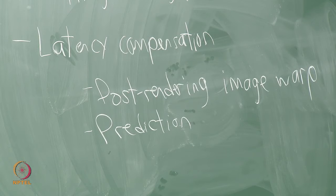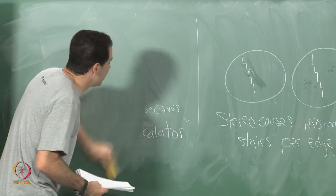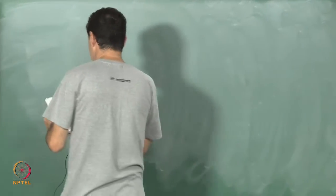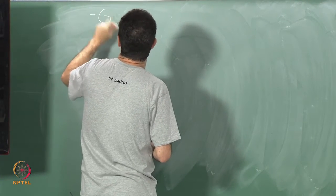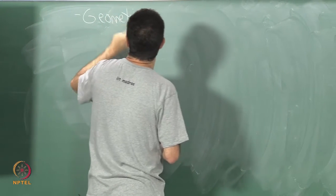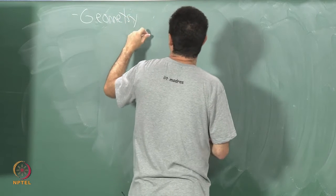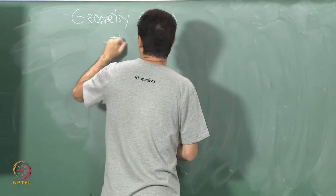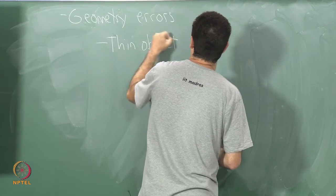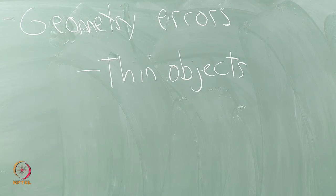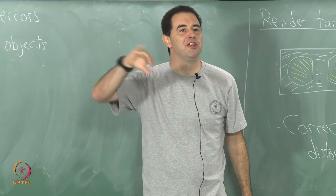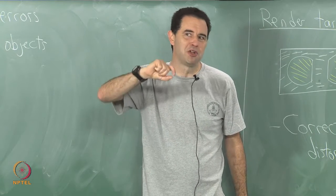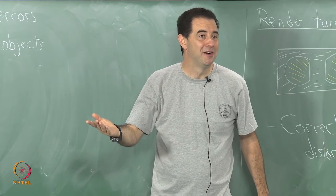One more topic and then I will get into some ways to mitigate these problems. In the models we use there are a lot of geometry errors. For example, thin objects: a geometric model might have leaves on a tree, and these leaves are very thin — so thin that their thickness is much lower than the width of a pixel in any typical rendering.